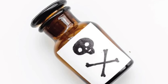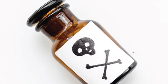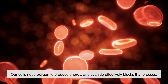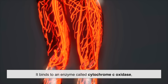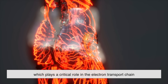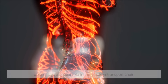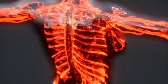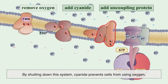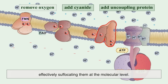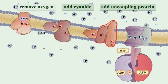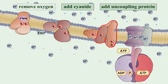Cyanide is deadly because of how it interferes with cellular respiration. Our cells need oxygen to produce energy, and cyanide effectively blocks that process. It binds to an enzyme called cytochrome C oxidase, which plays a critical role in the electron transport chain — the final stage of cellular energy production. By shutting down this system, cyanide prevents cells from using oxygen, effectively suffocating them at the molecular level. The result is rapid organ failure, especially in high-energy demand organs like the heart and brain.